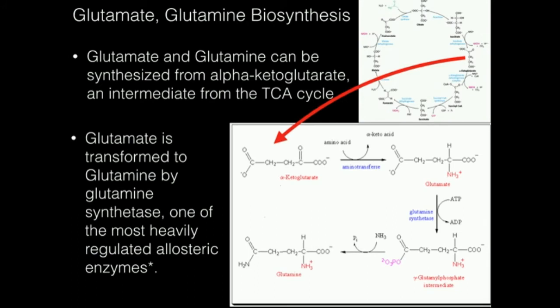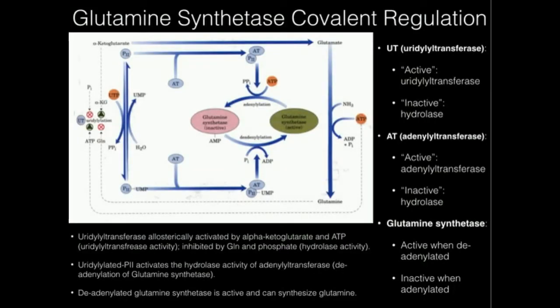We need to regulate ammonia levels very tightly. There will be a summary video at the end of amino acid biosynthesis covering this, as it also leads into nucleic acid synthesis. Glutamine synthetase is regulated in two ways: allosterically, which will be the next video, and covalently, which is this video.